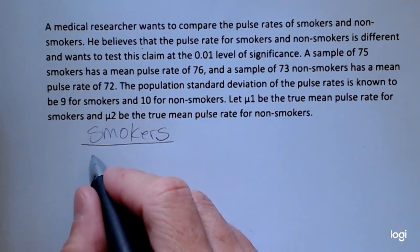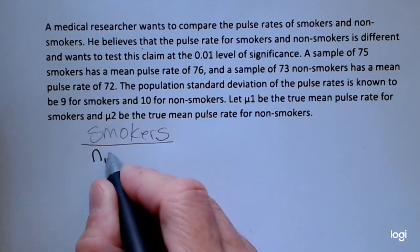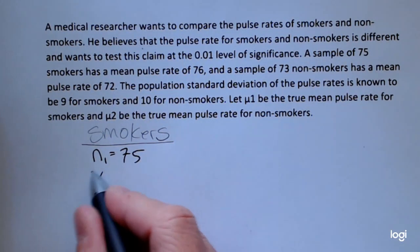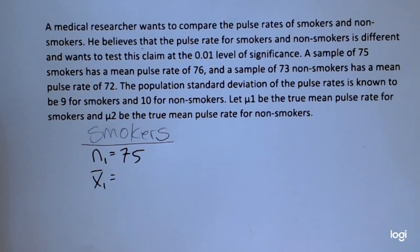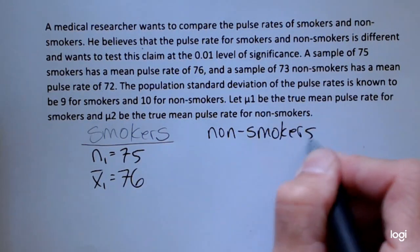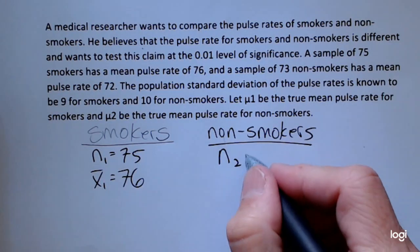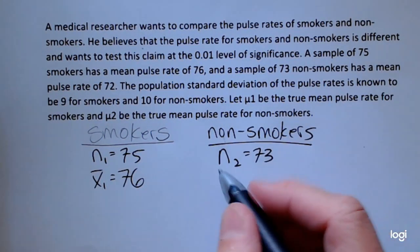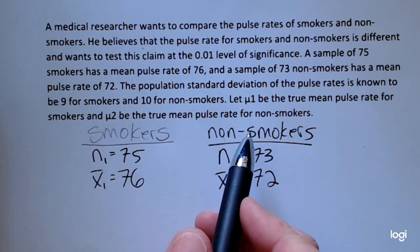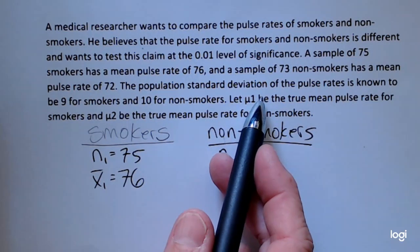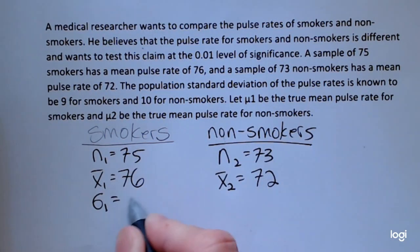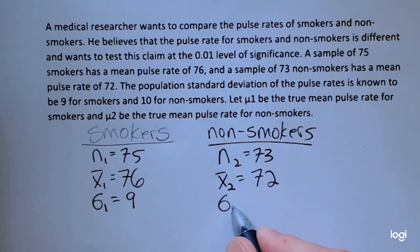For smokers, the sample size was 75 — I'll call smokers sample 1 — and the sample mean for smokers was 76. For non-smokers, the sample size was 73, which I'll call sample 2, and that sample mean was 72. The population standard deviations are known for both: sigma sub 1 is 9 for smokers, and sigma sub 2 is 10 for non-smokers.